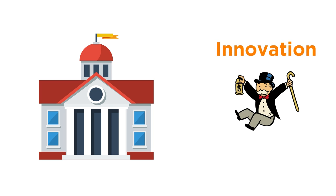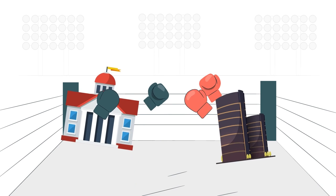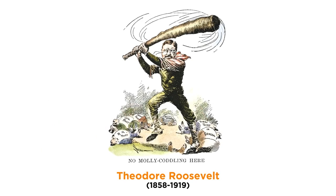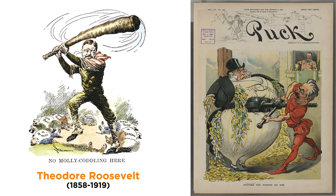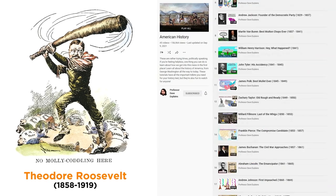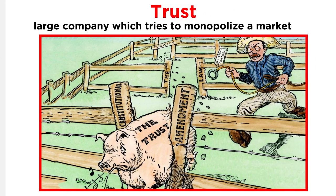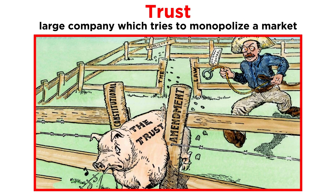But you are likely more familiar with governments fighting monopolies. Perhaps you have visions of Teddy Roosevelt trust-busting giant corporations during the progressive era of the early 1900s, as we learned in the American History series. A trust is an old term that describes a large company which tries to get monopolistic control of a market.